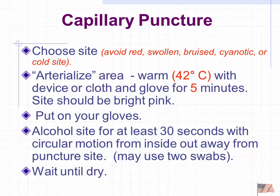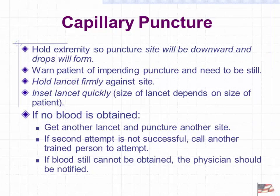Avoid sites that are red, swollen, bruised, or cold. Warm the site using a cloth dampened with warm water, then wrap it in a glove — seems goofy but it works well. Put on your gloves, then alcohol the site starting from the center and moving outward. Once dry, perform the puncture while holding the extremity downward so that gravity helps the blood flow out.